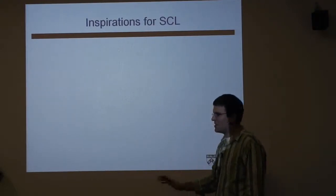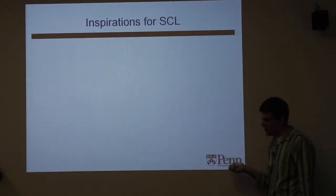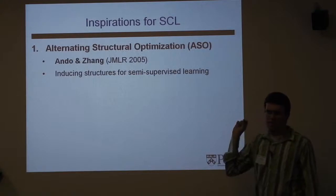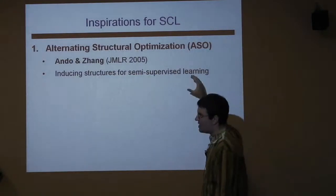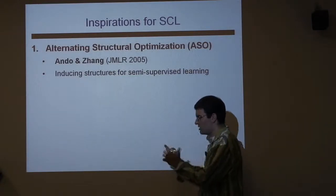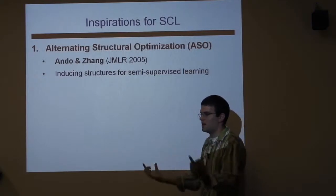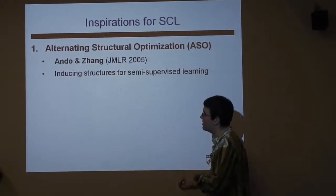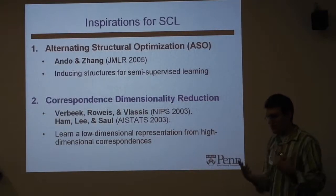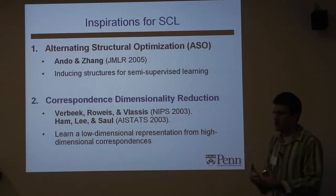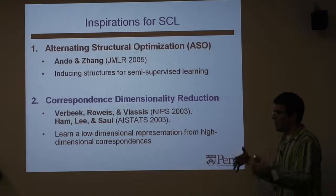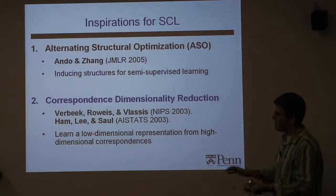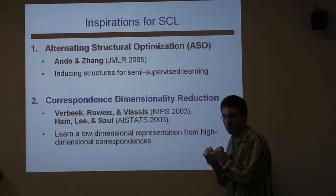Before going into results, two direct inspirations for my design of SCL. First, alternating structural optimization by Ando and Zhang — a semi-supervised technique that uses auxiliary predictors on unlabeled data to train discriminative models and characterize a reasonable hypothesis space. Second, for those who know dimensionality reduction, this area of correspondence dimensionality reduction, where you have high-dimensional representations of a single low-dimensional manifold and want to learn a manifold that respects these high-dimensional correspondences.